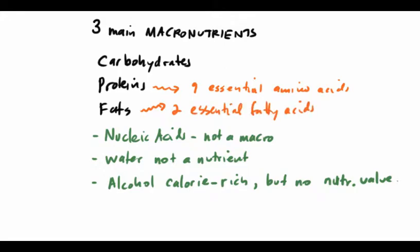By essential what we mean is that we can't synthesize them. We can't make them from scratch. If we don't eat those amino acids, if we don't consume proteins that contain those amino acids, then we're going to be nutritionally deficient. If we don't eat natural fats that contain those two essential fatty acids, then we're going to be nutritionally deficient or malnourished, and we'll be seeing the consequences of malnutrition.